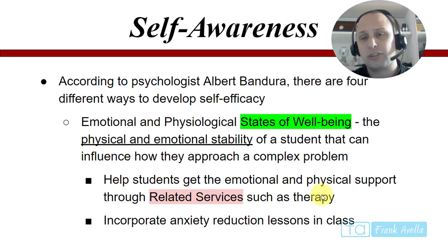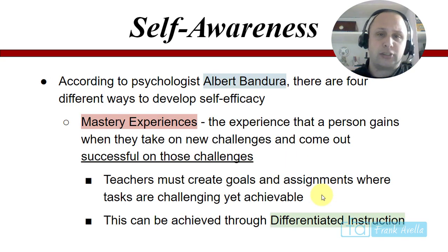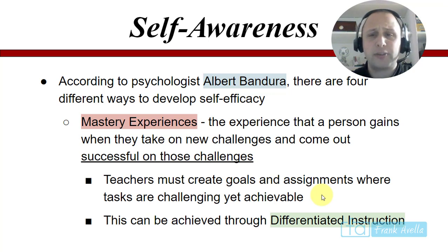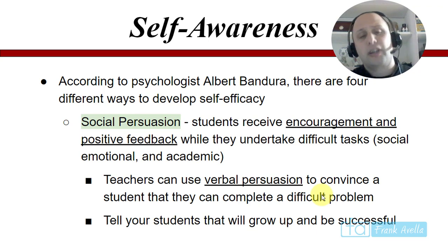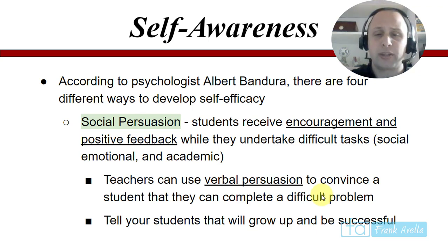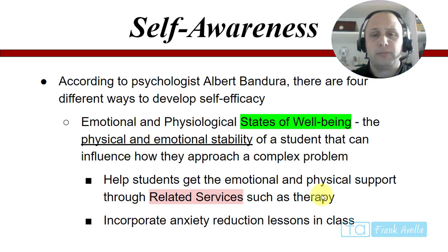The fourth way is emotional and psychological states of well-being — the physical and emotional stability of a student that can influence how they approach a complex problem. Incorporate anxiety reduction into your lessons. To summarize the four ways to develop self-efficacy: mastering experiences by taking on new challenges, vicarious experiences through positive role models, social persuasion by getting encouragement and feedback, and emotional and psychological well-being — these children have to be well emotionally and physically.